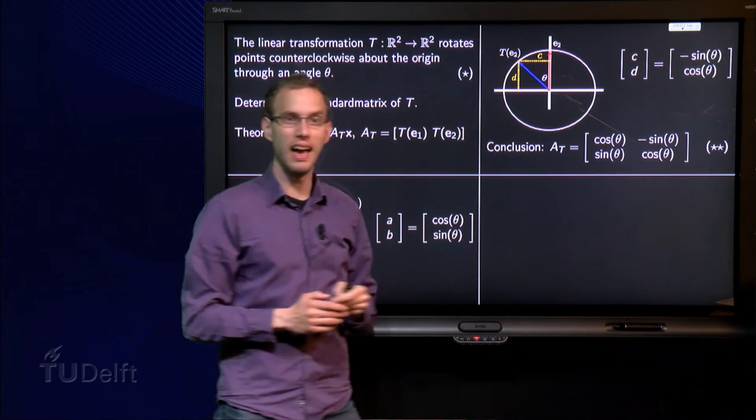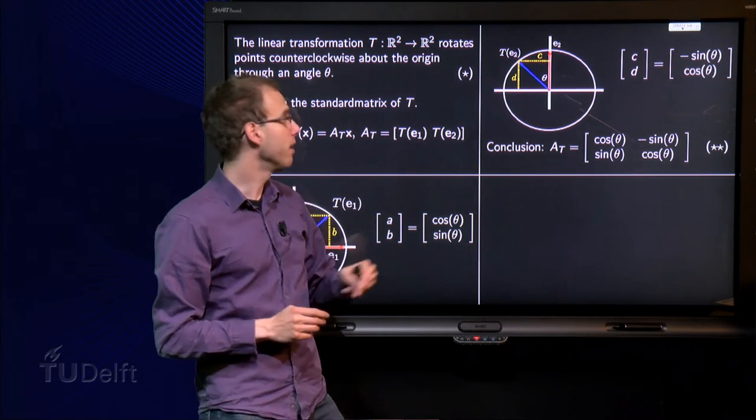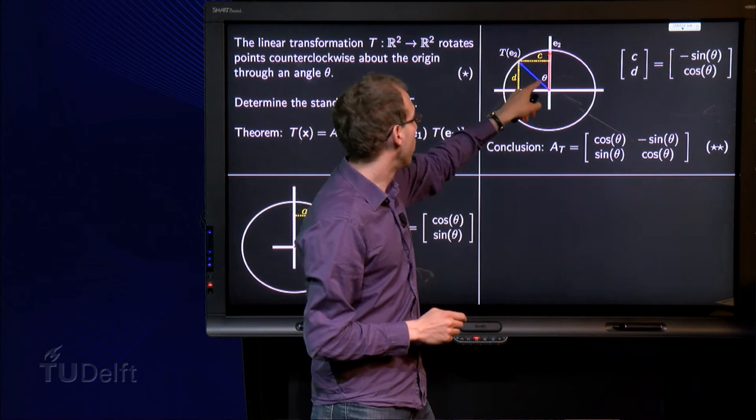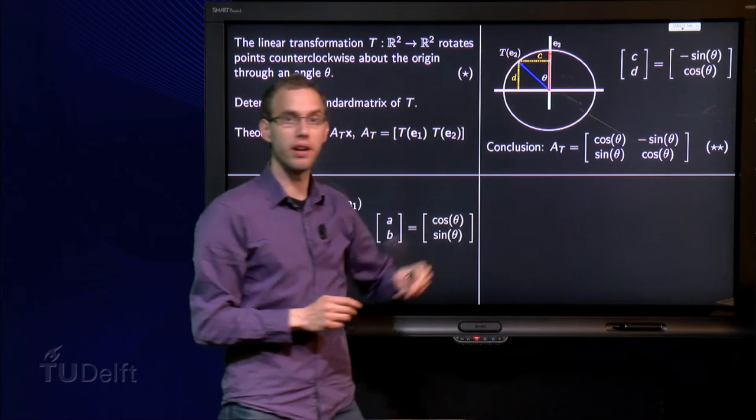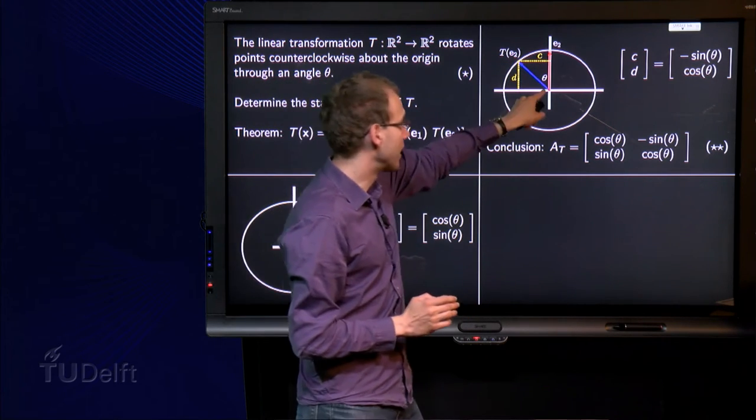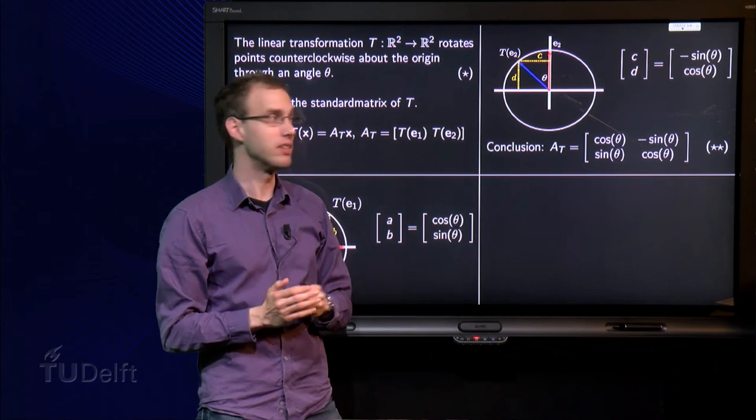If we look again at the triangle over here, then the cosine of θ, with the θ over here, equals this length over 1. This length is exactly D, so D is cosine θ.